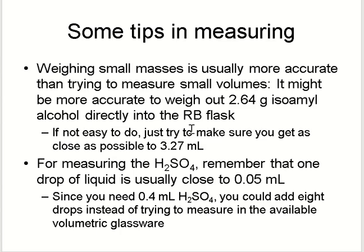Some practical tips: when measuring isoamyl alcohol, it is better to weigh it as 2.64 grams, because 3.27 mL is a bit critical to measure by pipette. For sulfuric acid, take 0.4 mL — you can use a micro pipette to take 400 microliters. Alternatively, use a dropper: since one drop is about 0.05 mL, eight drops of sulfuric acid will give you your desired 0.4 mL.